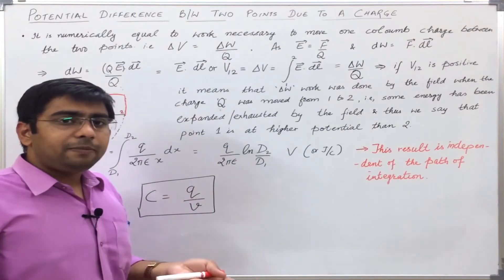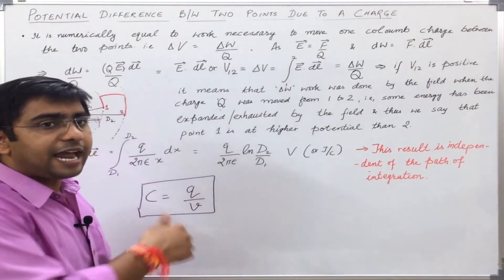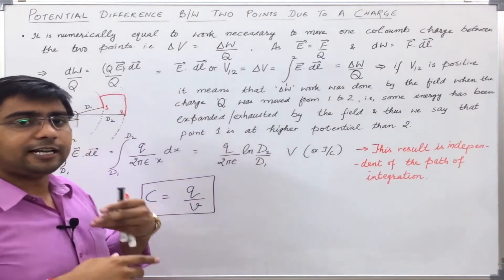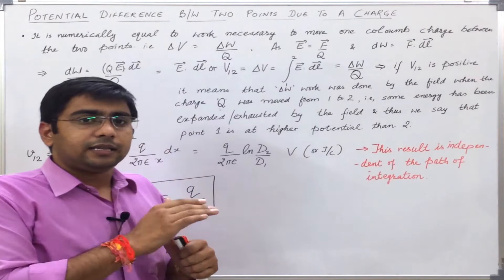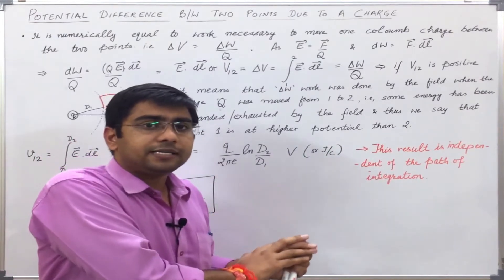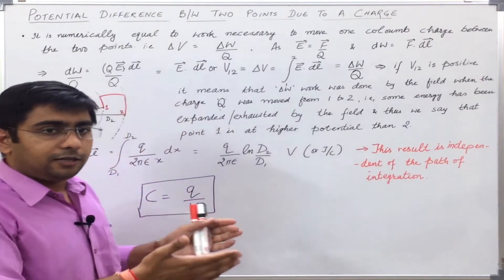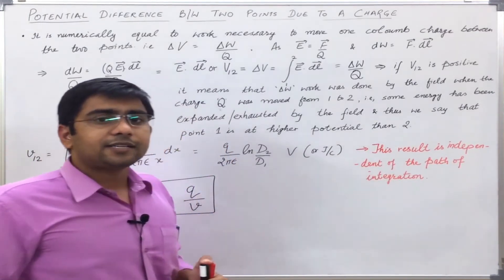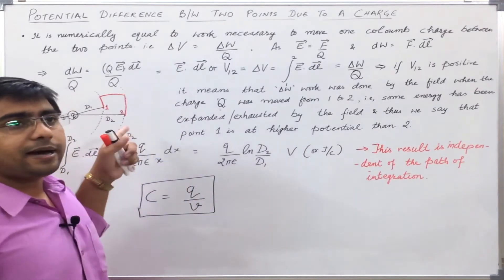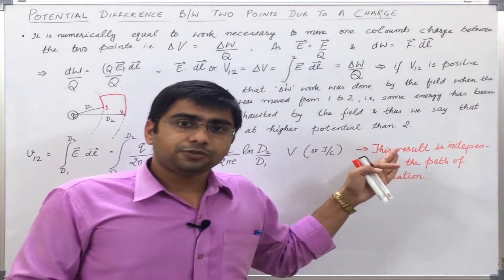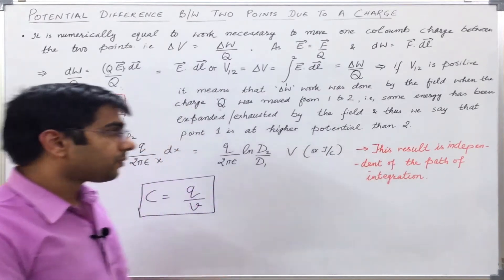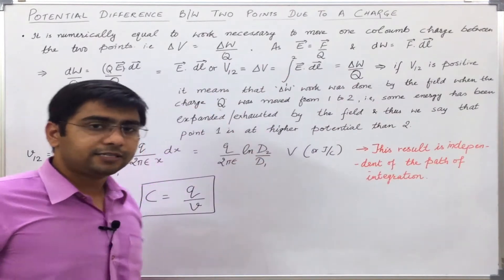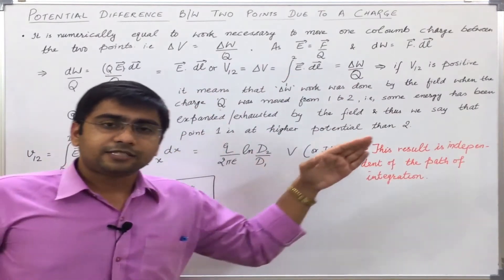It will be easier to understand now the sign — how do we choose the sign of the potential difference. If the field does work on a positive charge, it means that the first point is at higher potential and the second point is at lower potential. That is, the point from where the positive charge has been moved, when the field was created by some positive charge and I was moving a positive charge. In this way, energy is exhausted by the field, so point 2 is at some lower energy.